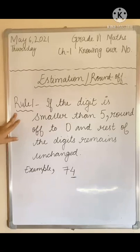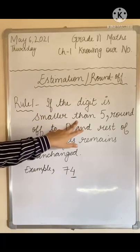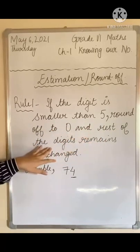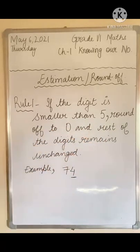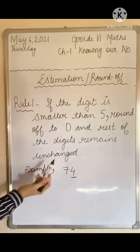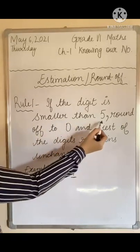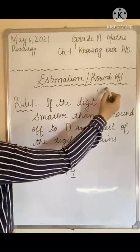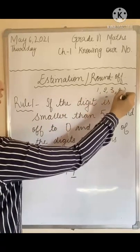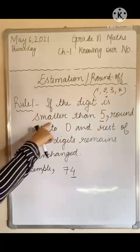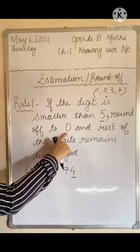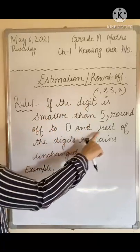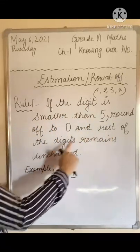Rule 1: If the digit is smaller than 5, round it off to 0 and the rest of the digits remain unchanged. If the digit is smaller than 5, meaning it could be 1, 2, 3, or 4, then round it off to 0 and the rest of the digits will remain unchanged.